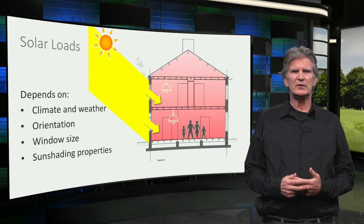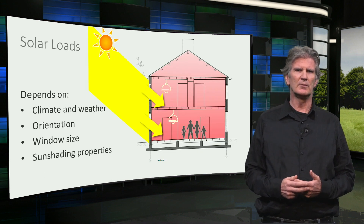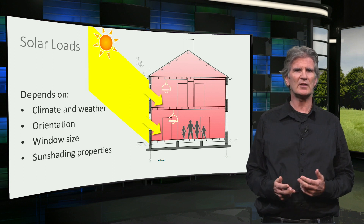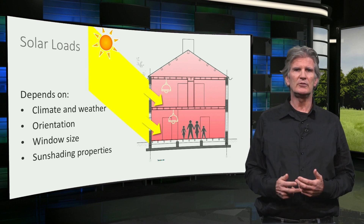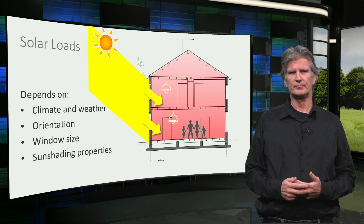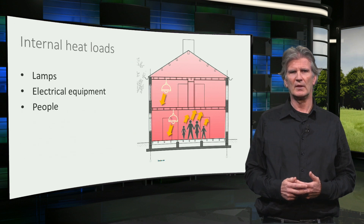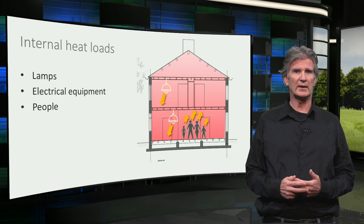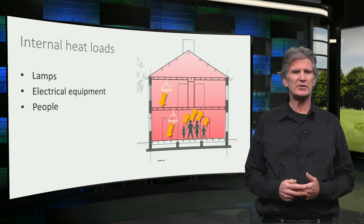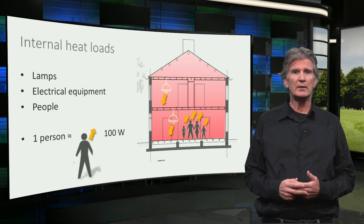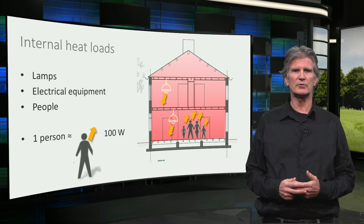When the sun is shining, there is an incoming heat flow through the windows. The amount of incoming energy depends on the orientation and size of the windows and the sun shading properties of the windows. Inside the house there are also heat sources like the heat produced by lamps, electrical equipment, and even the people themselves. Remember, one person produces on average 100 watts of heat.